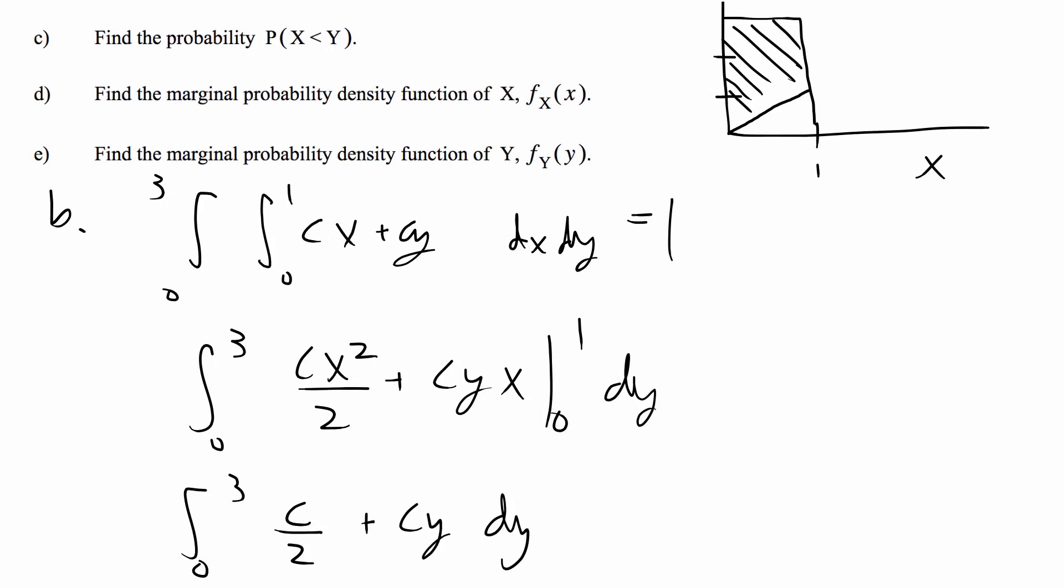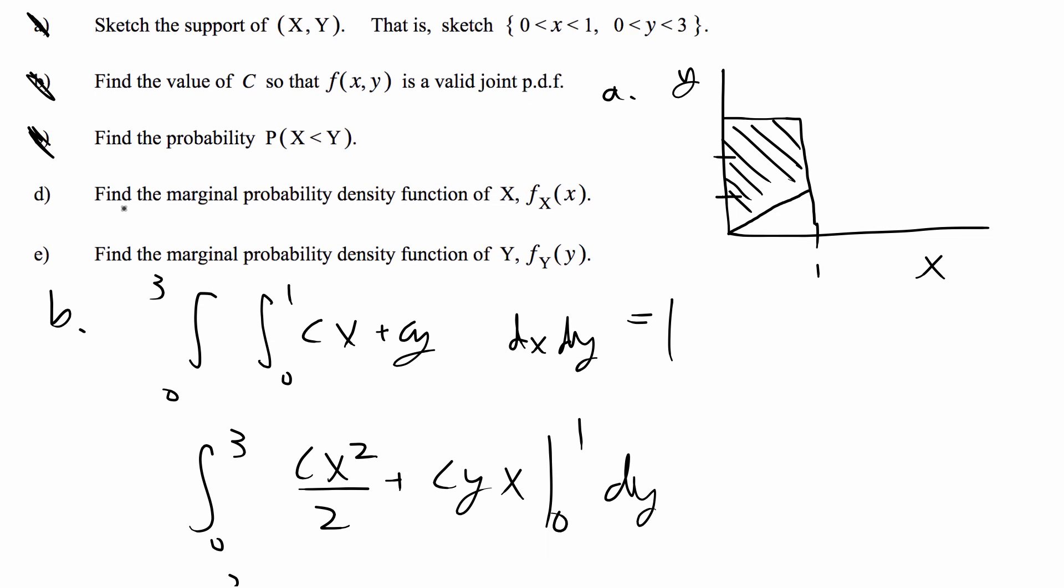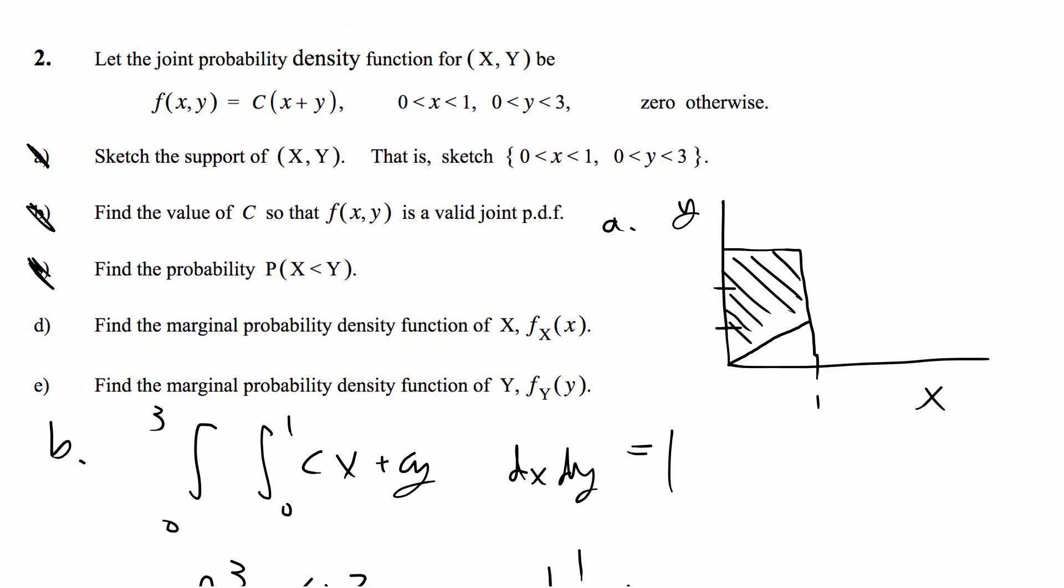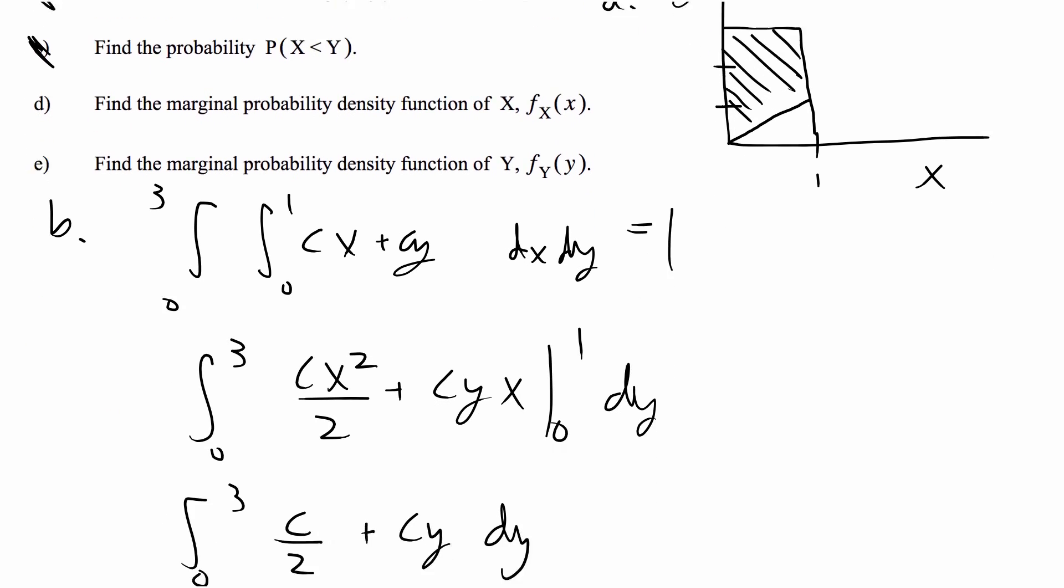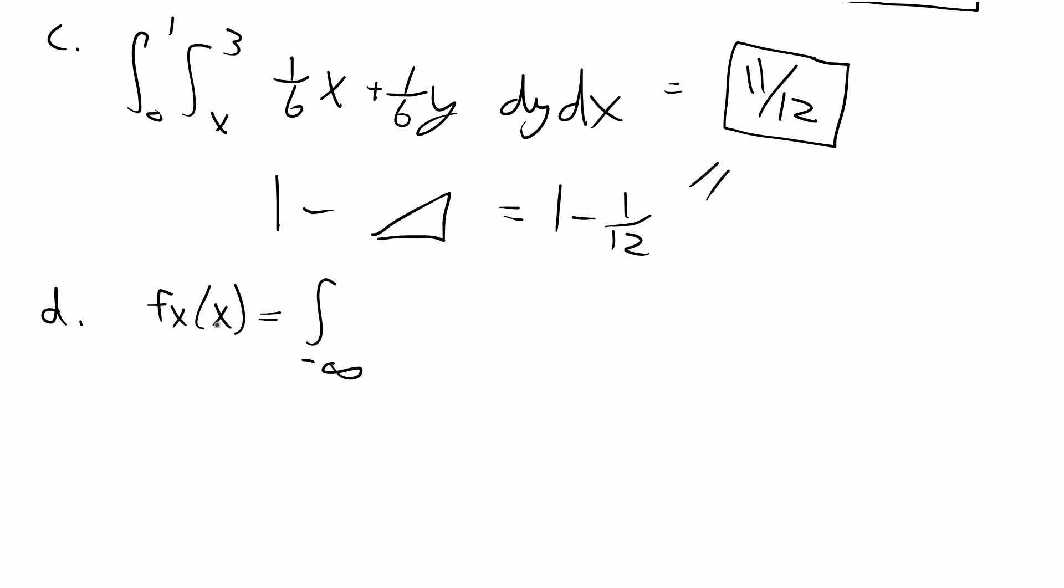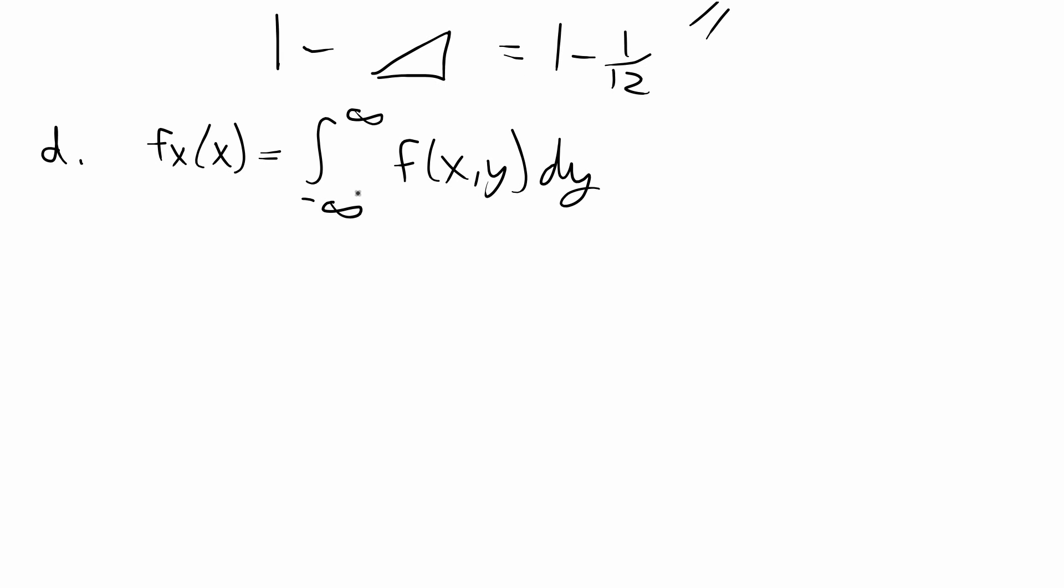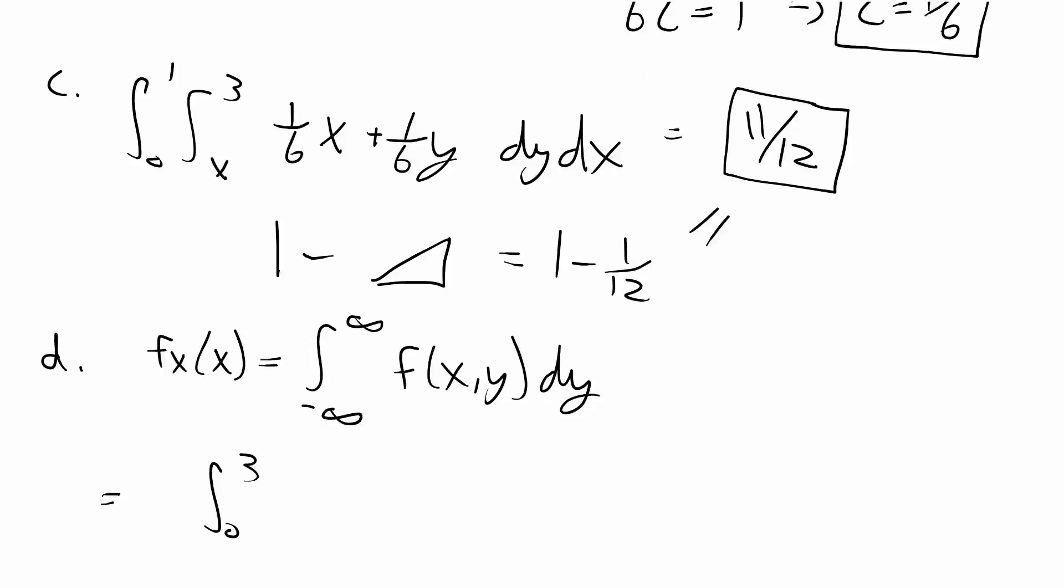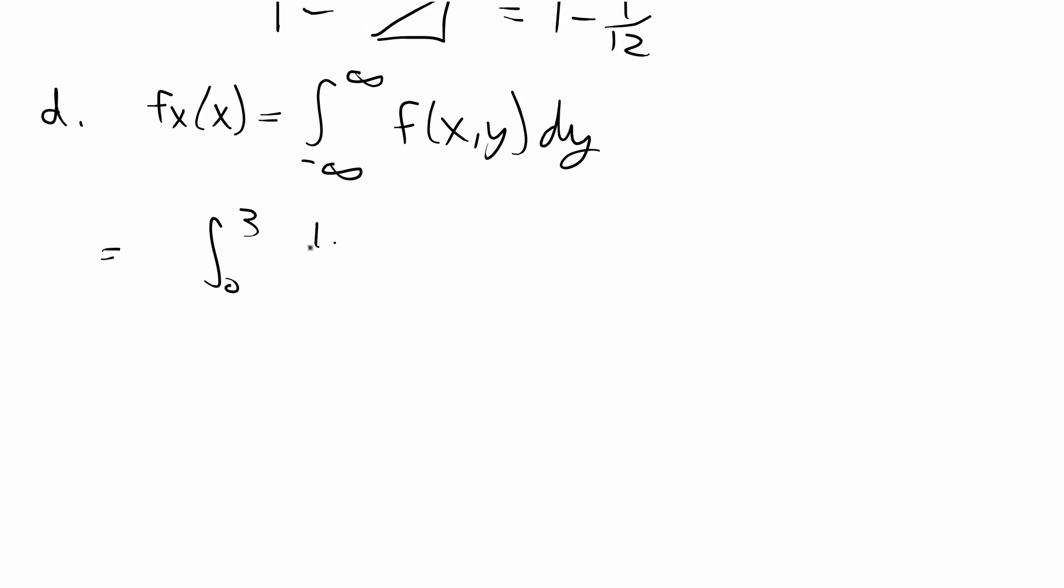We're done with C. D and E say find the marginal probability density function and the first one we're going to find is the probability density function f_X(x). The formula for the continuous case to find the marginal is that f_X(x) equals the joint over dy, so every instance of dy. In this case, this is going to be a single integral, so that's going to be from 0 to 3 which is the support of Y and we're just going to plug in the joint formula for the PDF.